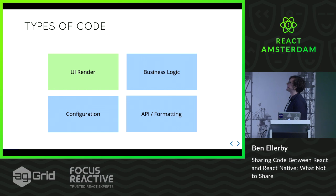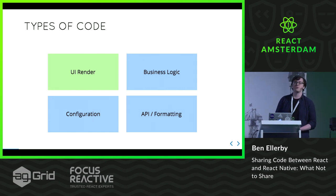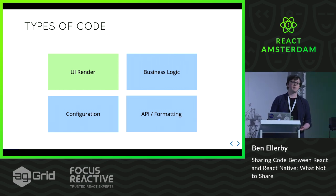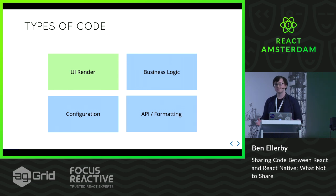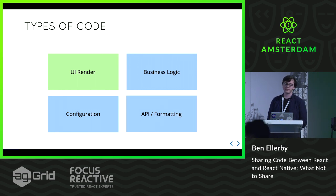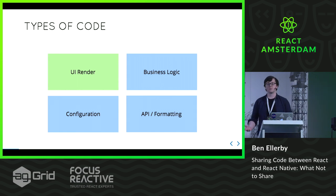When we started the project, we began to think about the different types of code that you have in an application. You have your UI render code — the render method of a React component — your business logic, such as how many items users can add to their baskets or when can you use a voucher code, configuration, which is quite a broad term covering things like translations, constants, and API endpoints, and API and formatting — how we call APIs, be them RESTful APIs or GraphQL endpoints, and how we format the requests to send to the backend and the responses to come back.